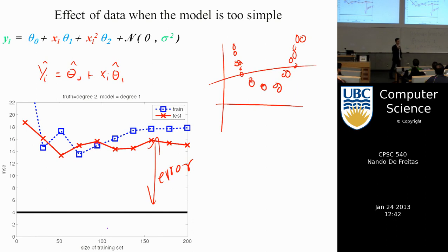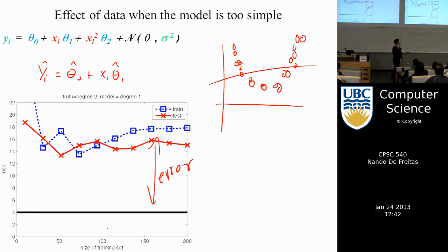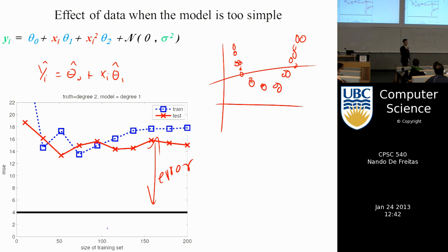If your model is too simple — for example, if you try to fit a linear model to data generated by a quadratic — a line cannot fit a quadratic; it doesn't have enough degrees of freedom. So there is a systematic bias error that you can never get rid of. No matter how much data you observe, if your model is too simple, it will not capture reality. This is visible in the homework's bioinformatics application.